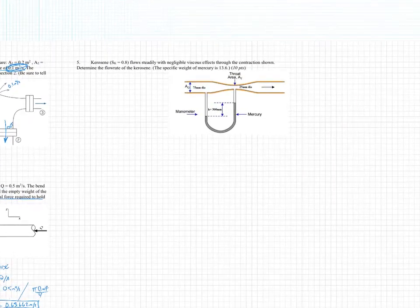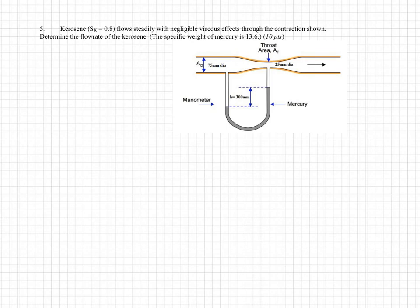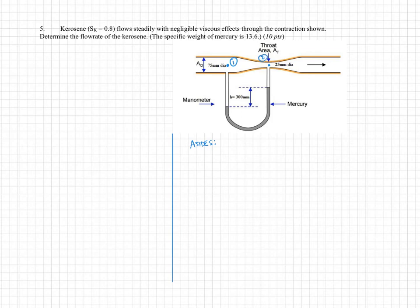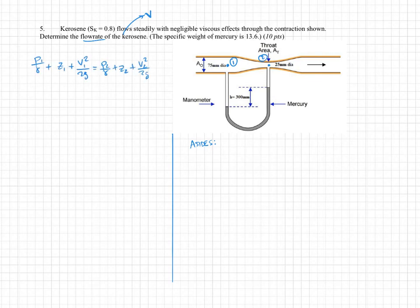Now the last problem — a manometer and flow problem. We place points 1 and 2 where we have manometer information, and we want the flow rate of the kerosene, which means we need the velocity. We'll use Bernoulli since the problem states negligible viscous effects. The elevations of points 1 and 2 are the same, so those terms cancel. Now we need P1 and P2 from the manometer.